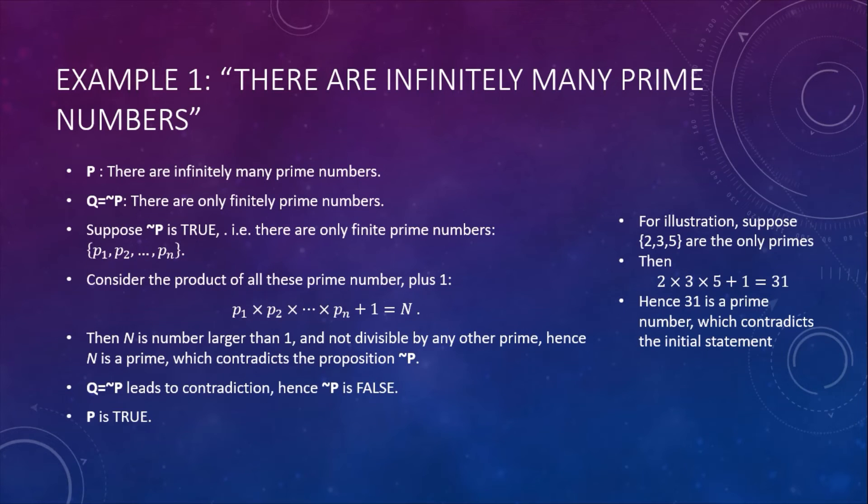Let's take an example. This is a proof by Euclid. He proved that there are infinitely many prime numbers—that's proposition P. To prove that, he started with the negation of P, proposition not-P: suppose there are only finitely many prime numbers. For illustration, let's just pretend that 2, 3, and 5 are the only primes. Then we can construct a number N which is the product of all those prime numbers plus 1.